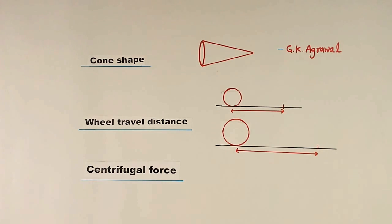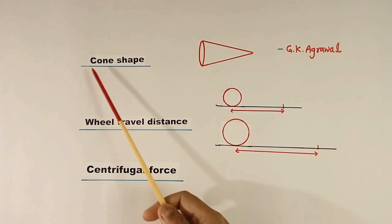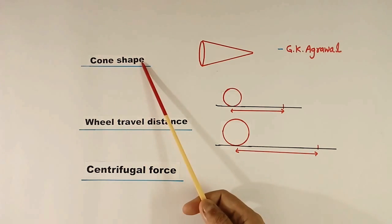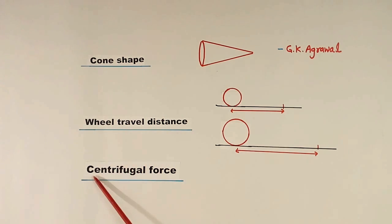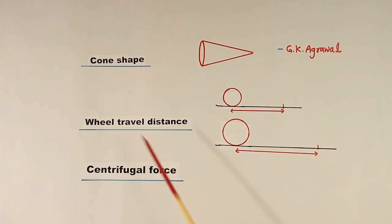Now train turning depends upon three things: cone shape, wheel travel distance, and centrifugal force.